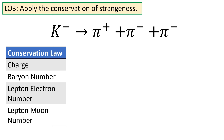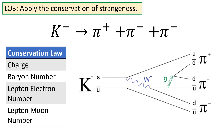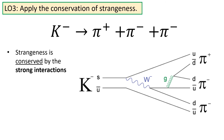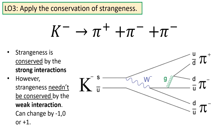Here's another interaction: a K-minus kaon decays into three pions. This interaction conserves the four quantum numbers we've discussed so far. However, strangeness is not conserved in this interaction, because a kaon is a strange particle whereas the pions are not. We have a strangeness of minus one before and zero after the decay. Strangeness is conserved by the strong interaction — interactions that take place through the strong force. However, strangeness needn't be conserved by the weak interaction, shown on the diagram by the exchange of the W minus boson. The weak interaction can change the strangeness by minus one, zero, or plus one.